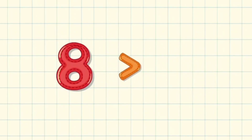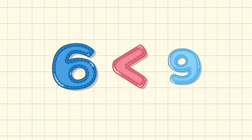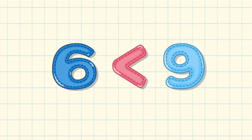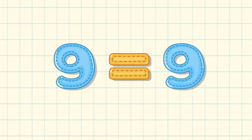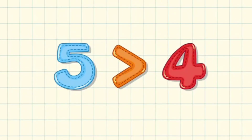8 is greater than 7. Next, 6 is less than 9. Next, 9 is equal to 9, the number is same. 5 is greater than 4.